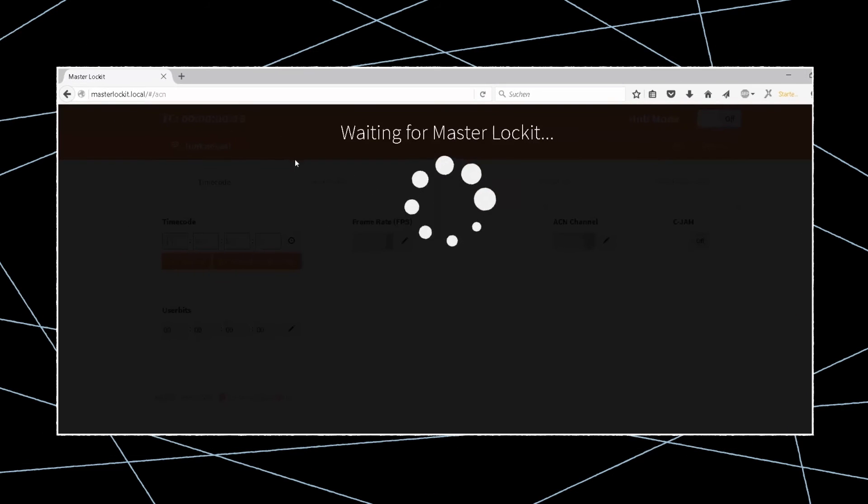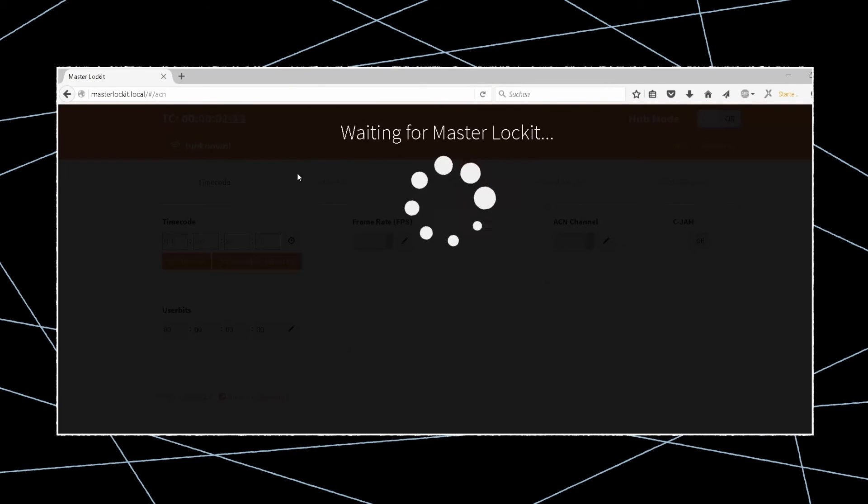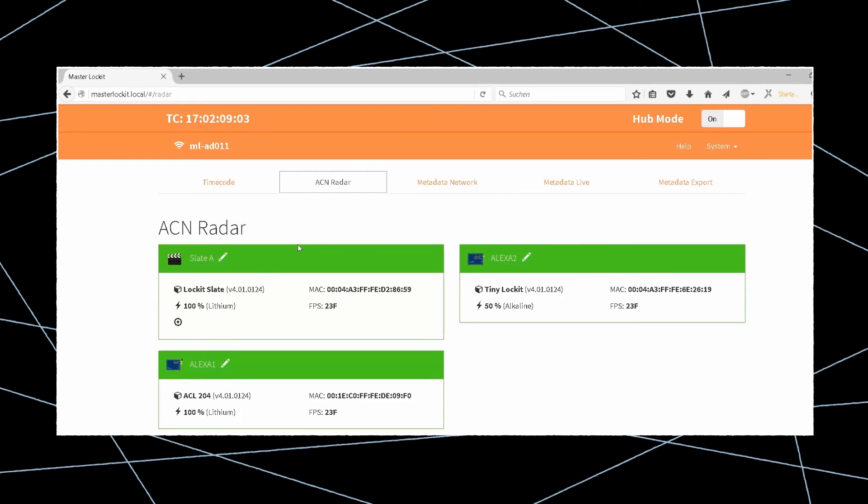Now go to the timecode tab and change the frame rate of the unit to the project timebase by clicking the pencil and choosing from the drop-down menu, and apply. Type in the required start value or simply use the time of day from your device. Check to make sure the master is set to the same ACN channel as the other locket devices, and then hit the start C-JAM button. Within a few seconds, all your ACN devices should appear green on the screen, ready for naming, and displaying the battery status and current frame rate.